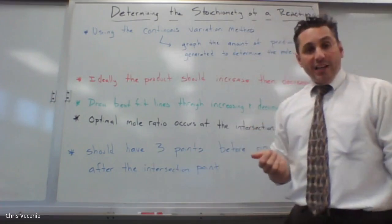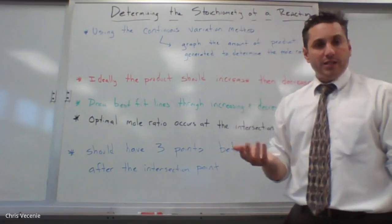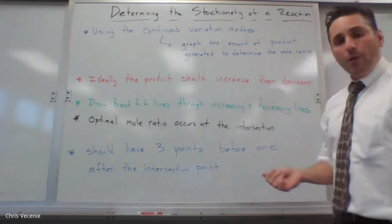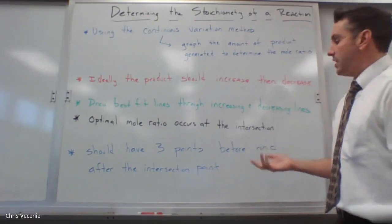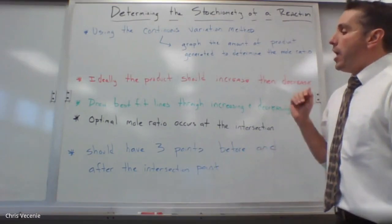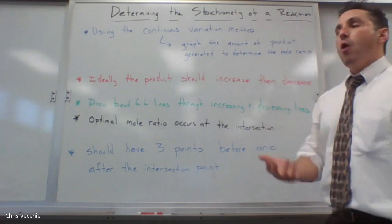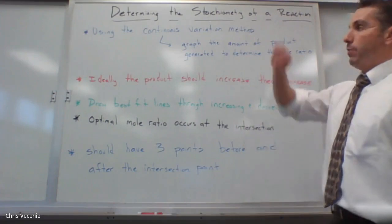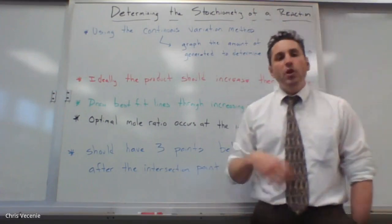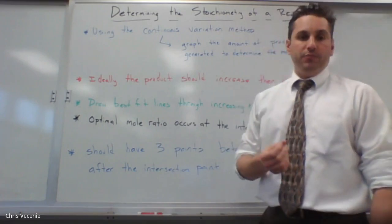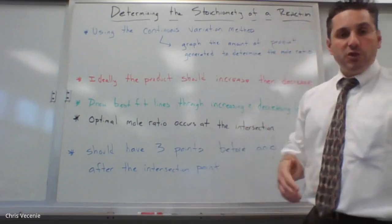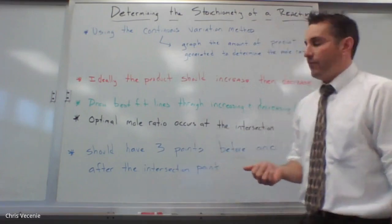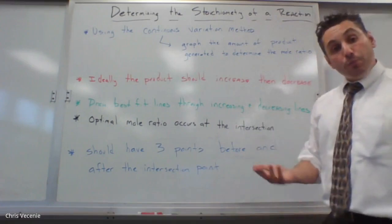If the optimal ratio is one of the ones we tested, it will land right on one of our plotted points. If it's not one we tested, we can still see what that ratio is by looking at the X axis of our graph. For reliability, I should have three plotted data points before and after the intersection point to claim a very accurate experiment. There are some things we keep constant and some things we don't care about, but for the most part it's pretty straightforward.